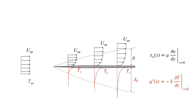If we think about the shear stress at the wall, we see that it's given by mu times du/dy, the velocity gradient at the wall. And the heat flux — because the velocity is zero and it's purely conduction right at the solid surface — the heat flux at any location is given by Fourier's law: minus conductivity times the temperature gradient at the wall.